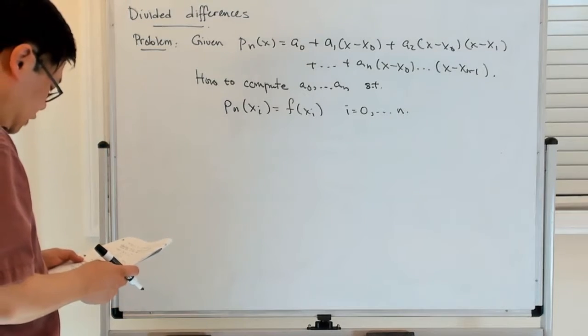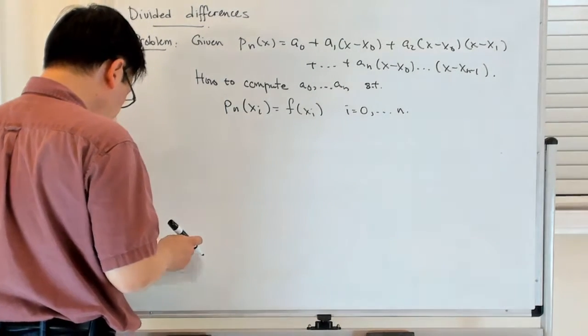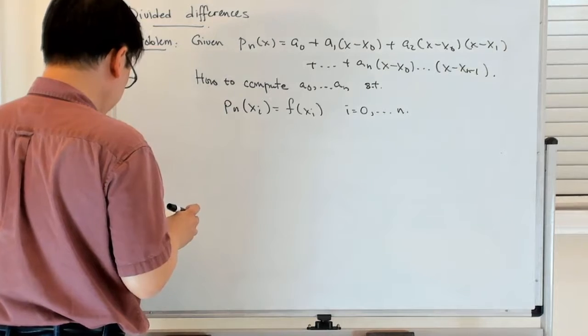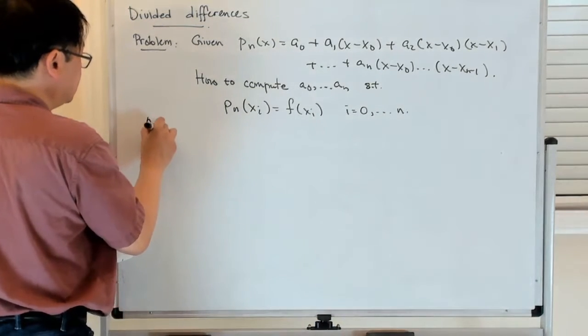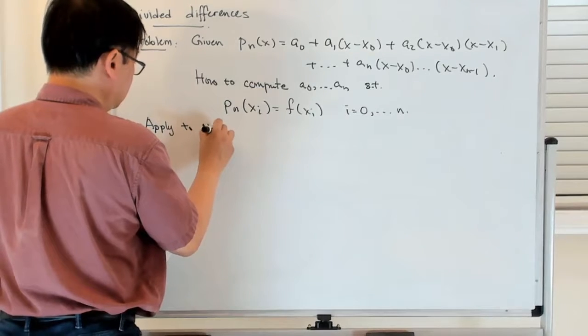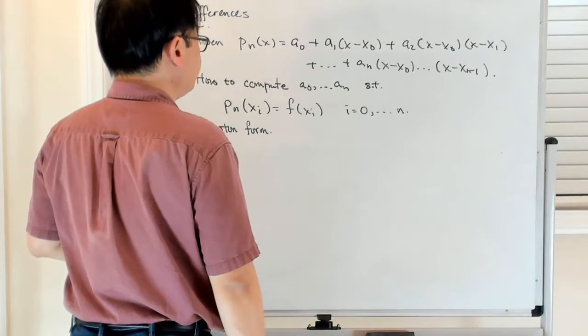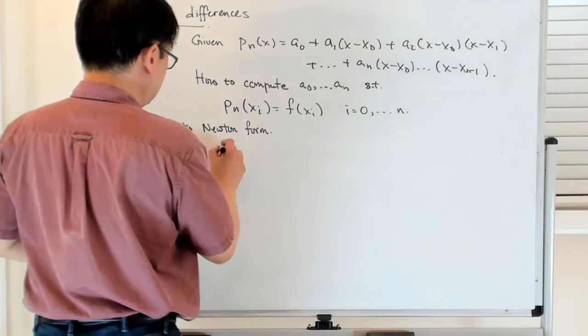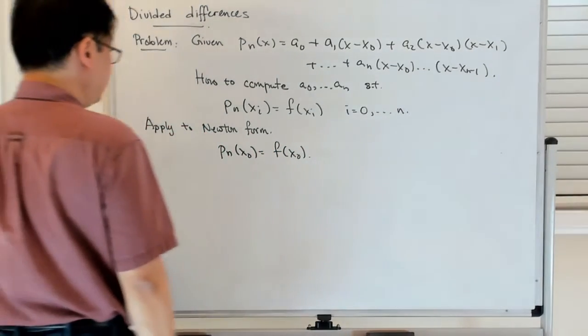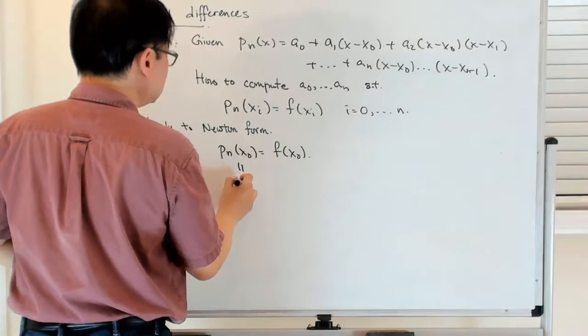So let's try to address this in a simple case. Let's apply the interpolation condition. Let's just use the first data point, which is that Pn(x0) = f(x0). But Pn(x0), it's easy to convince yourself, x0 is a factor in all the terms except for the first one. Pn(x0) is equal to a0.